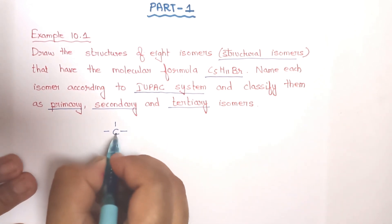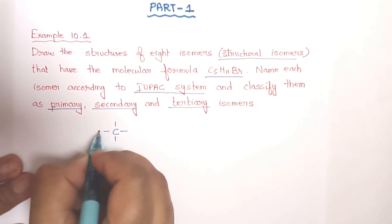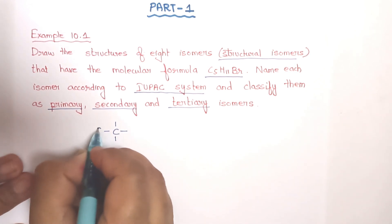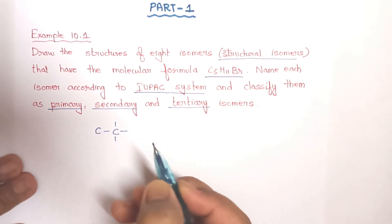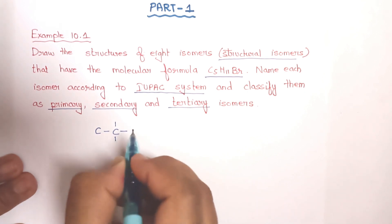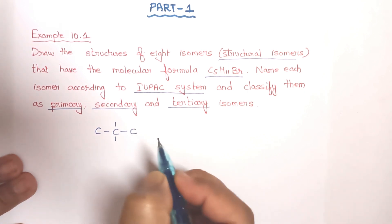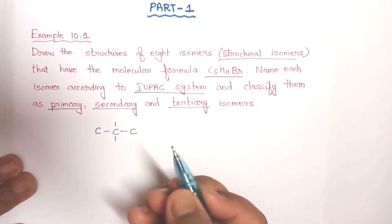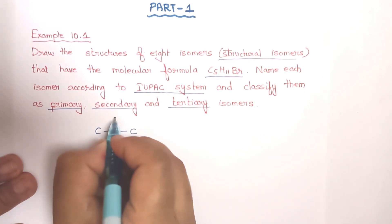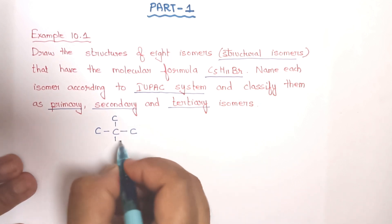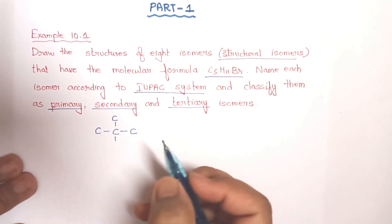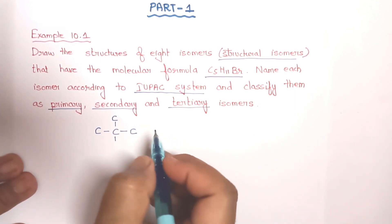Primary means the carbon atom attached to the halogen is attached to only one other carbon atom. Secondary means it is attached to two other carbon atoms. Tertiary means it is attached to three other carbon atoms. The valency of carbon is four, so each carbon should have four bonds.